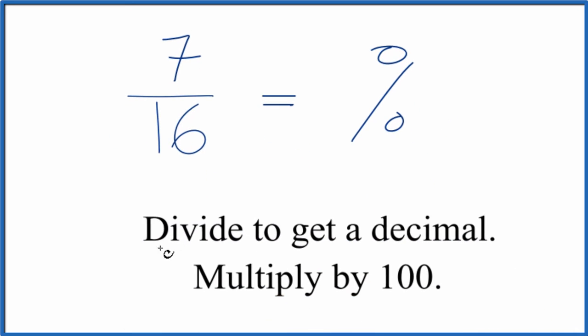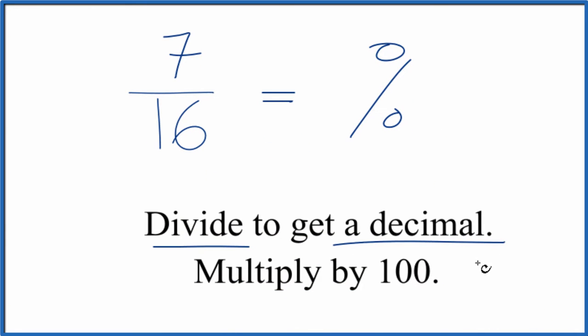The way we do that, we divide 7 by 16. That gives us a decimal. We take that decimal, we multiply it by 100, and we'll have our percentage for 7/16ths.